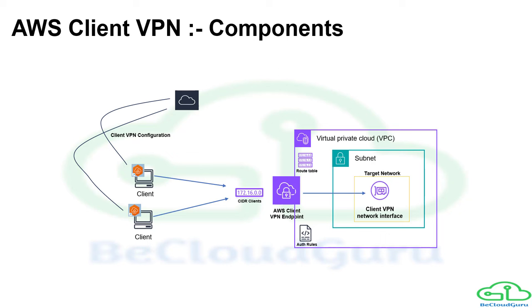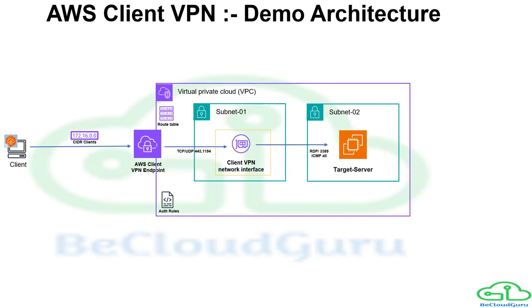Once the client is installed, you use the client VPN configuration file to create a profile. Once the profile is done, you can start having connectivity through the Client VPN endpoint to the Client VPN network interface. These are all the components that work together to give you end-to-end connectivity for your clients.